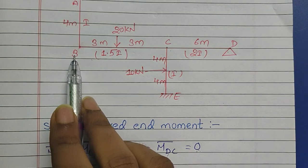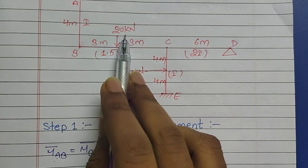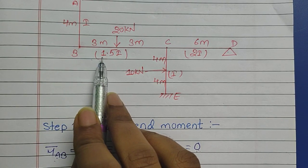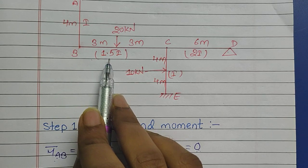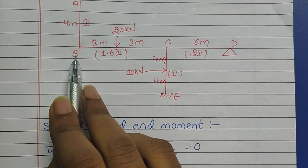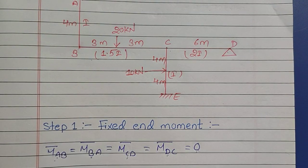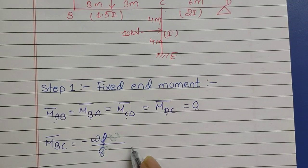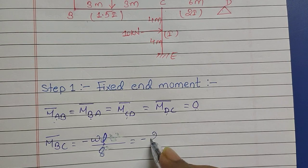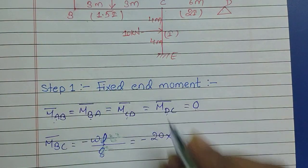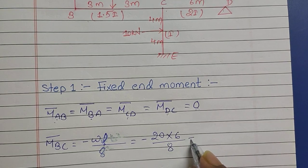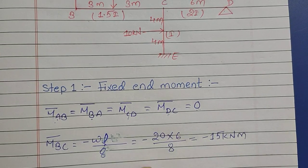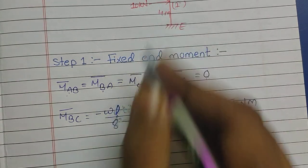The fixed end moment at B: since it is a point load acting at the center of the beam, its fixed end moment is calculated using the formula minus WL by 8. So the fixed end moment at B is equal to minus WL by 8, which equals minus W (20) into L (6) by 8, and it is going to be minus 15 kilonewton meter.